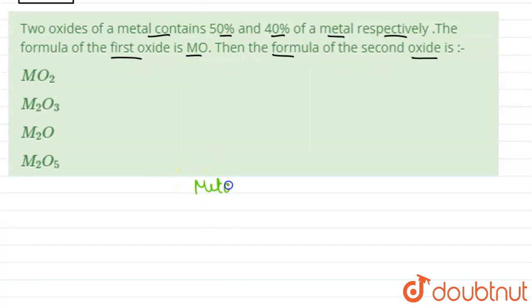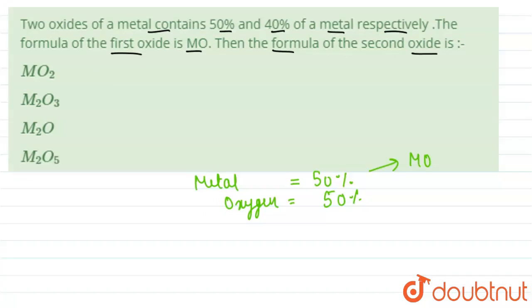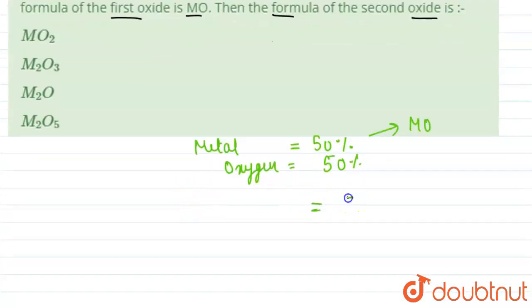We have in our first case oxides of metal contain 50 percent metal, so metal is 50 percent, so oxygen will also be 50 percent. And the oxide's formula is provided to us as MO, so we can calculate...